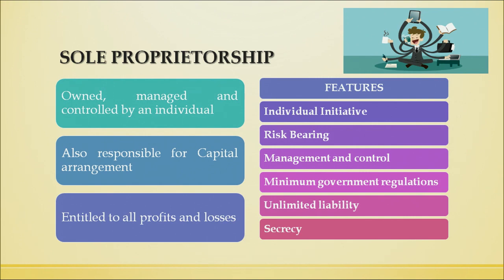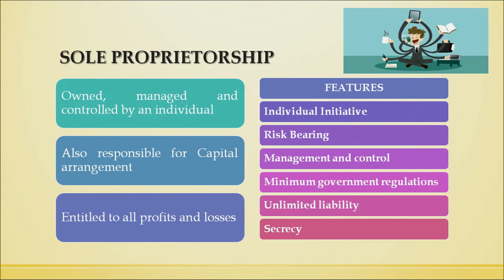The next feature is unlimited liability, which means that in sole proprietorship, the personal property of the proprietor can also be used to pay off debts, loans, or any other liability of the business. If any losses occur, the personal property of the sole proprietor will be used to pay off those debts. The last feature is secrecy — as all functions and decisions are in the hands of the owner, he can maintain secrecy. Now, merits and demerits of sole proprietorship business.